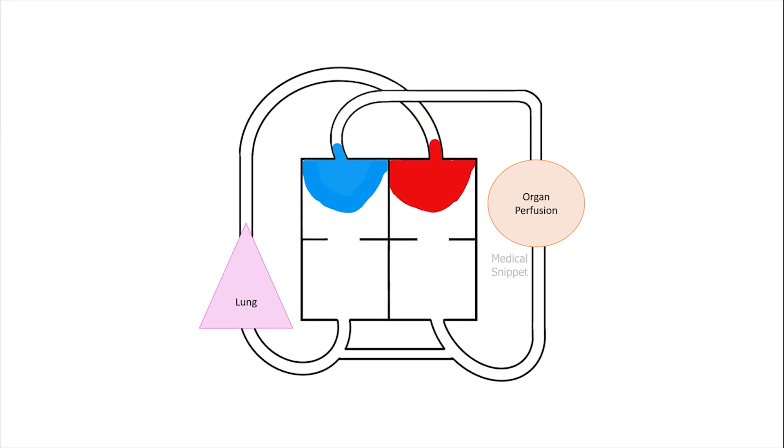In PDA, there is left-to-right shunt across the ductus due to high systemic vascular resistance when compared to pulmonary vascular resistance. There is increased blood flow through the pulmonary artery.